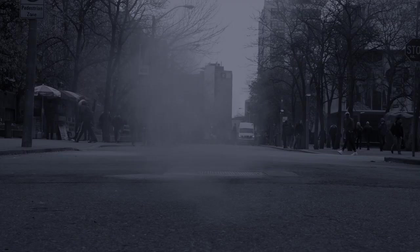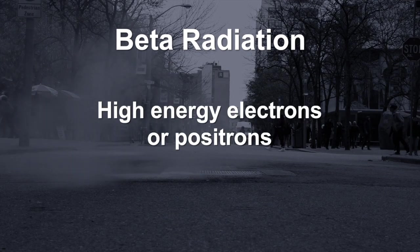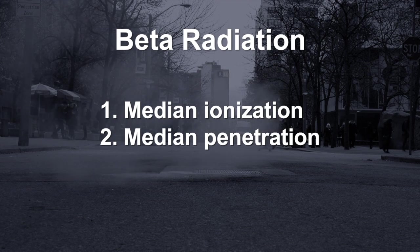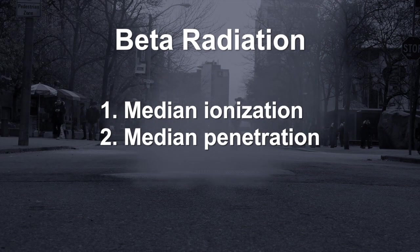Beta radiation consists of high energy electrons or positrons and has the median ionization and penetration ability of the three.